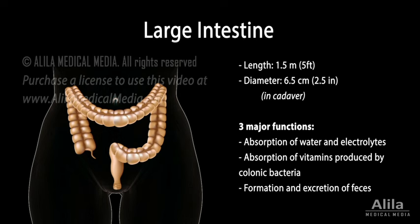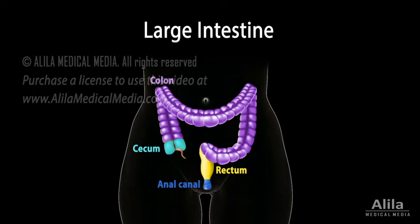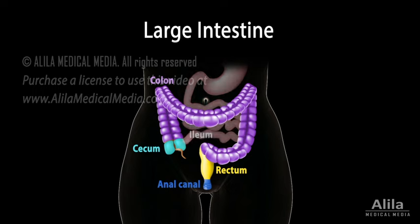The large intestine consists of the cecum, colon, rectum, and anal canal. The cecum receives food materials from the ileum via the ileocecal valve. At the lower end of the cecum is the appendix, a winding blind tube containing lymphoid tissue and a high concentration of intestinal bacteria.